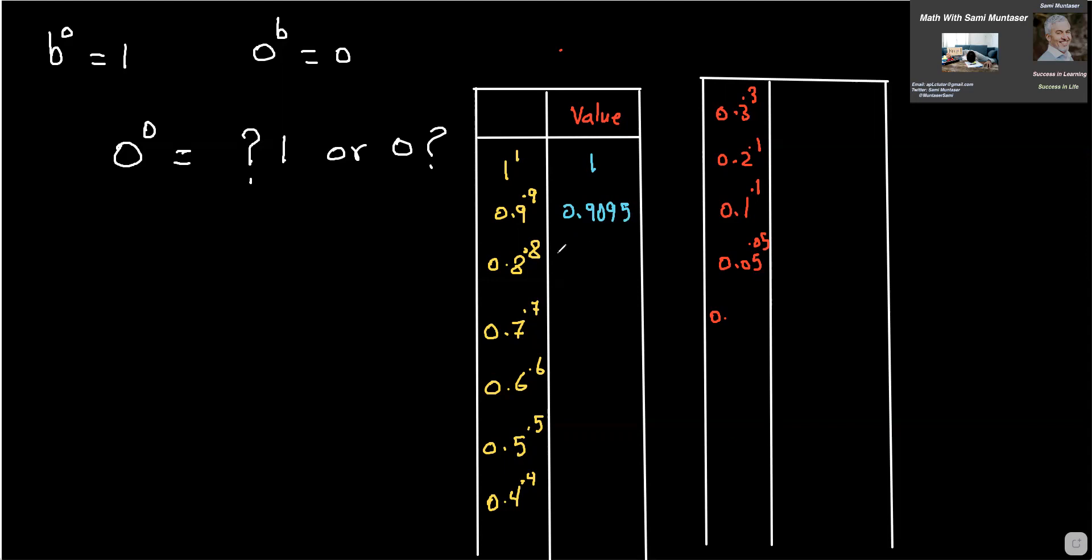I get 0.9095. And the decimal continues. So by the way, what we're doing here, if anybody did the first year calculus or even the grade 12 calculus is what we call limit. The limit. So we're basically trying to approach 0 to the power of 0. That's what we're trying to do. And we see where are we going with this?